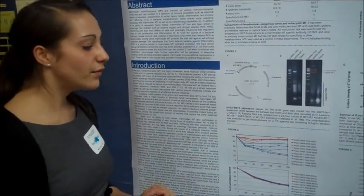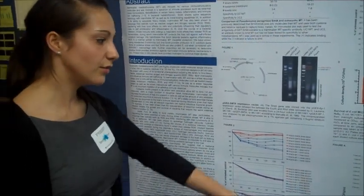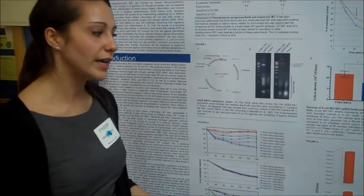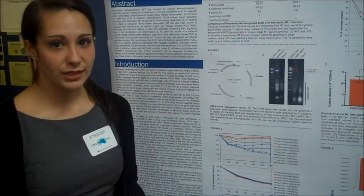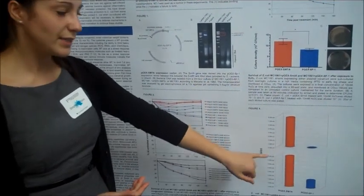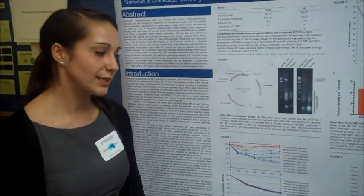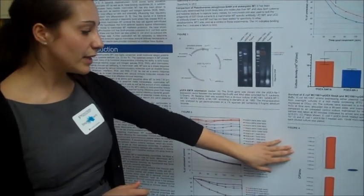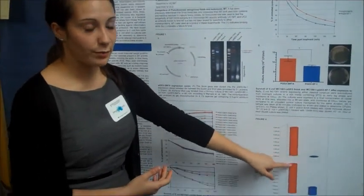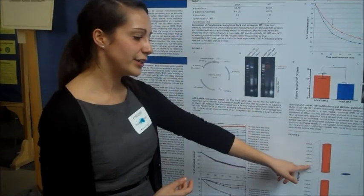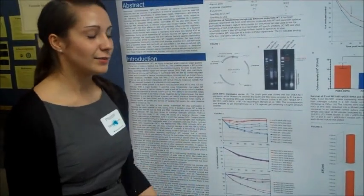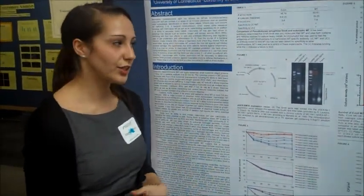Next, we infected macrophages with our two different strains of bacteria. Macrophages are a type of white blood cell — our first line of defense during infection — and they're known to secrete reactive oxygen species when they contact bacteria. Again, the red lines are bacteria expressing SMTA and the blue are bacteria that do not. We infected for either 30 minutes or 24 hours and recovered the surviving bacteria. More SMTA-expressing bacteria survived, allowing us to conclude that SMTA provides a protective benefit during infection.